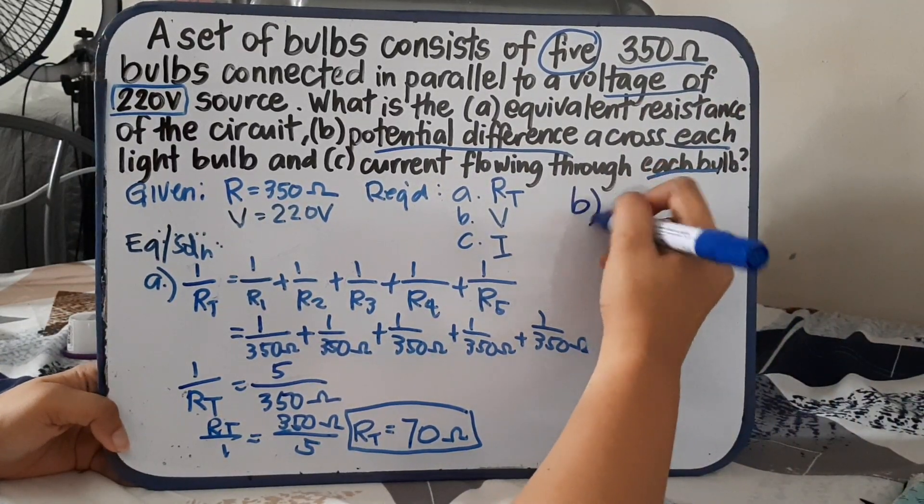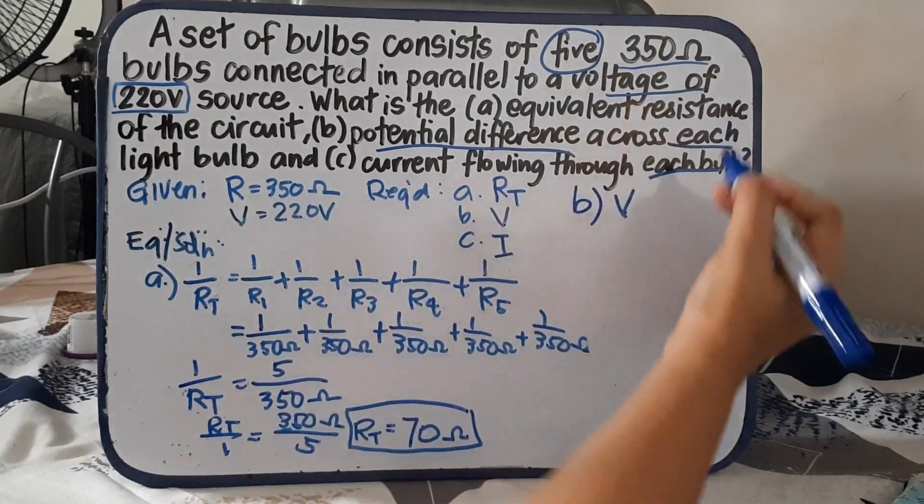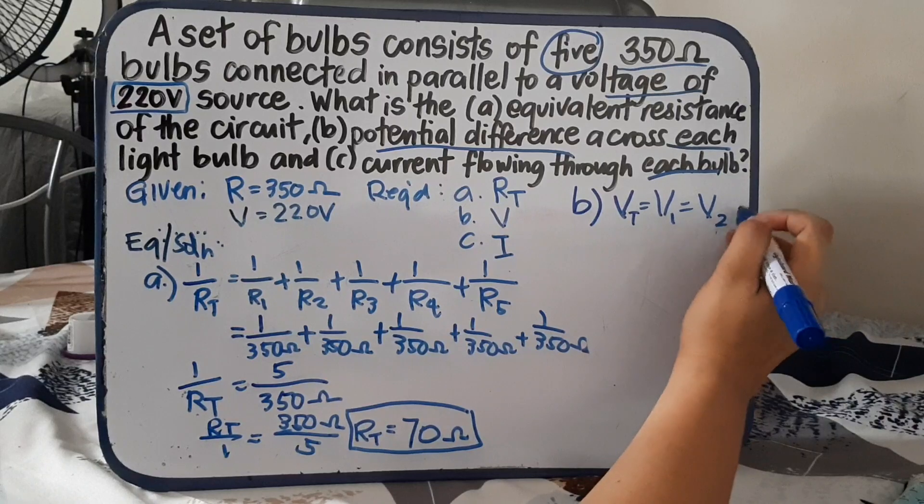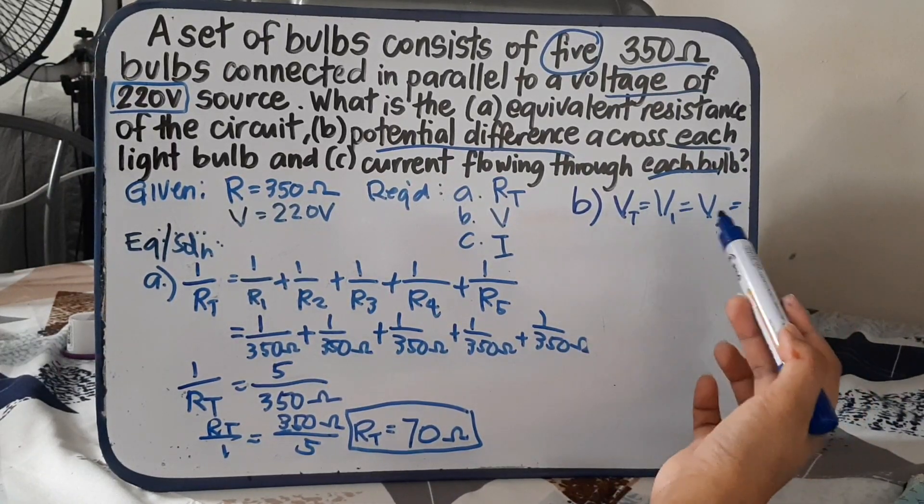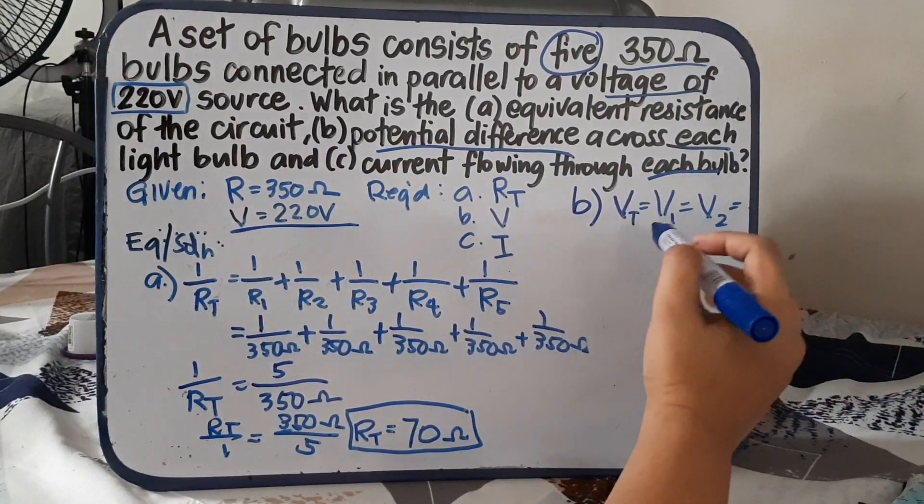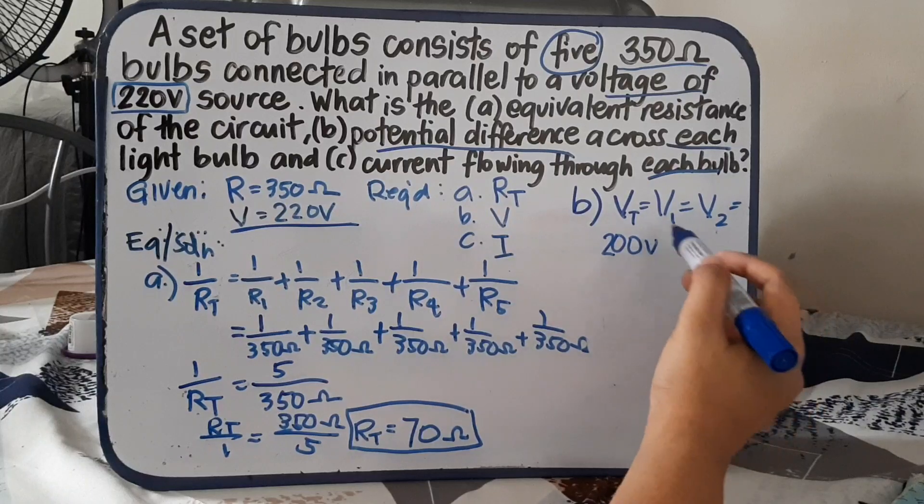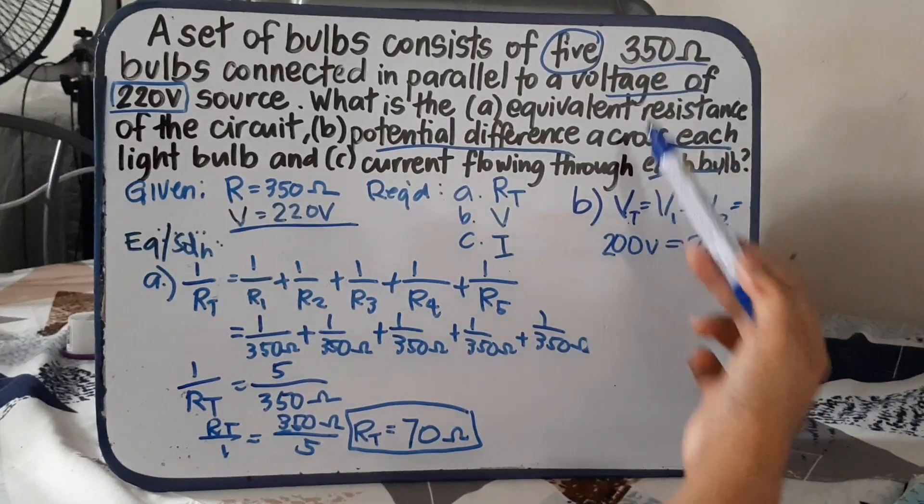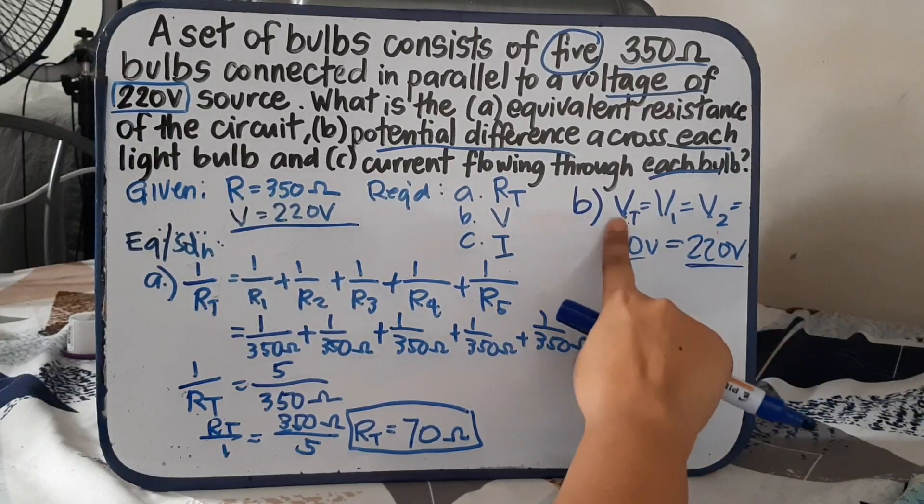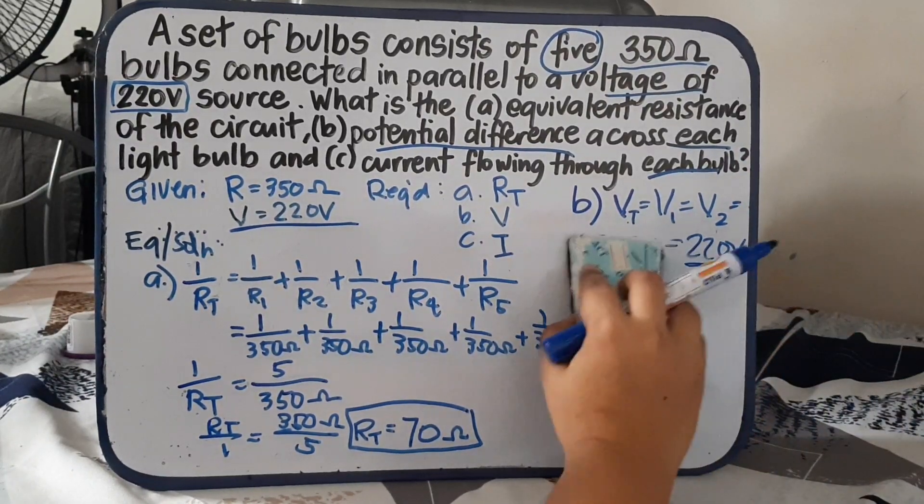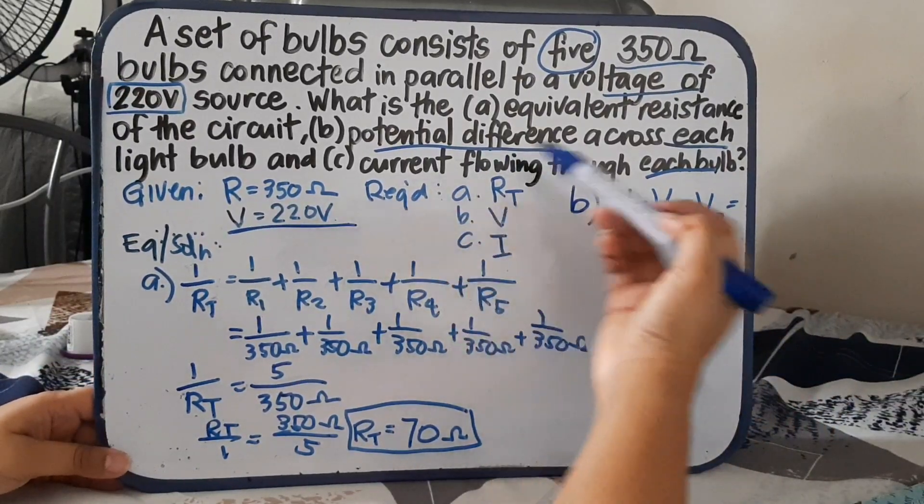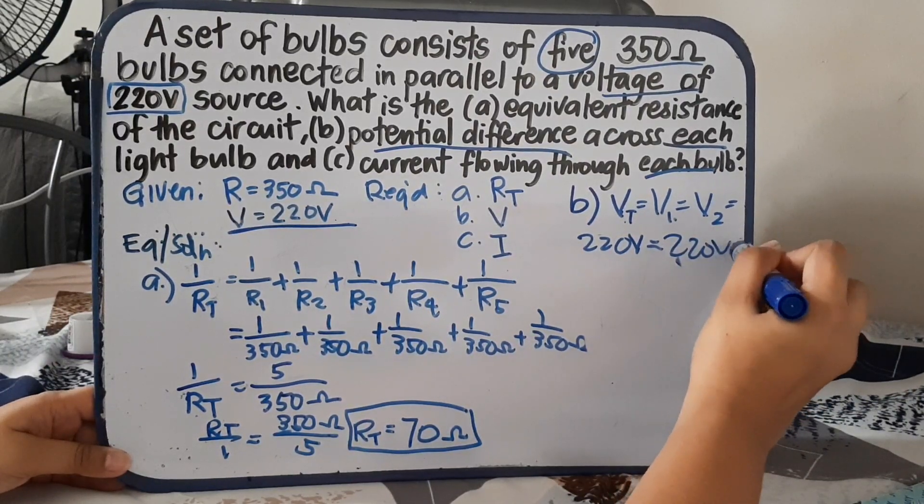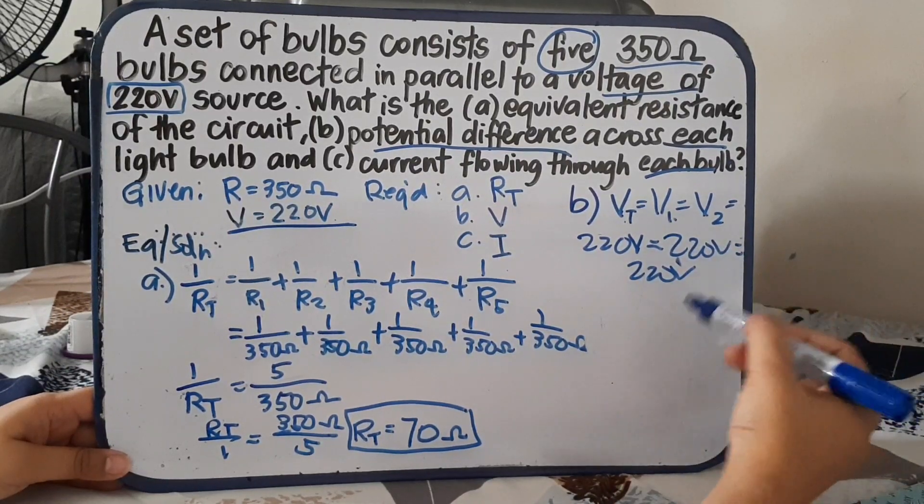How do we get the voltage of parallel circuit? In parallel circuit, the total voltage is equivalent to individual voltage. It means no matter how many there are, they all have the same voltage. So if we have a total voltage of 220 volts, it means the 220 volts total is also equivalent to 220 volts for each. All bulbs have 220 volts.